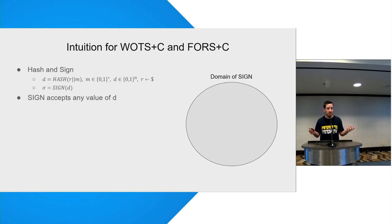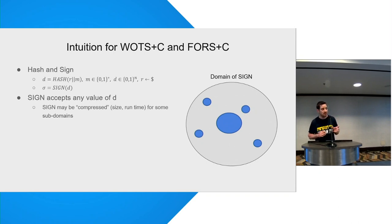And basically, our sign algorithm can handle any input from the domain of the hash function, which is good because we can get anything in this domain, so we need to be able to support it. However, if we look inside this domain, we might be able to find some subdomains that, for them, we can optimize the scheme. We can actually compress it and make it much more efficient as long as we are willing to only support this smaller subdomain.